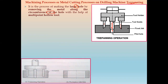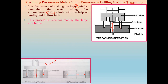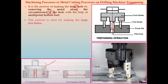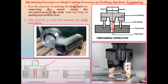In the trepanning layout, the workpiece is placed and the multi-point cutting tools perform the cutting. While drilling can only produce smaller hole sizes, the trepanning operation can make a much larger hole with a large diameter. This process is specifically used for making large size holes.